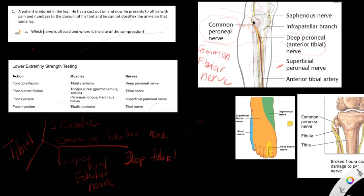If there is an injury or trauma on the lateral side of the leg, it will injure the common fibular nerve at this level. In this case, the cast was put on tightly, which compressed the common fibular nerve at this level, and therefore caused the same deficits that we see in this patient.